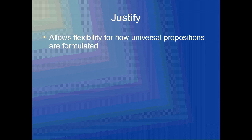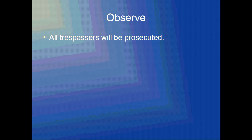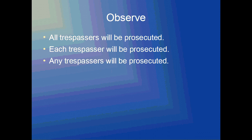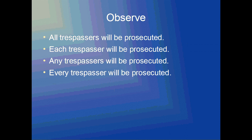The basic way to express a positive universal proposition is like this: 'All trespassers will be prosecuted.' There are at least three ways you could change the universal quantifier — which is 'all' — for this proposition: 'Each trespasser will be prosecuted,' 'Any trespassers will be prosecuted,' or 'Every trespasser will be prosecuted.'